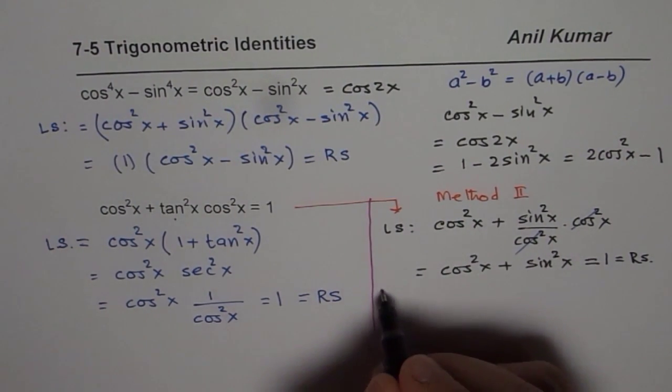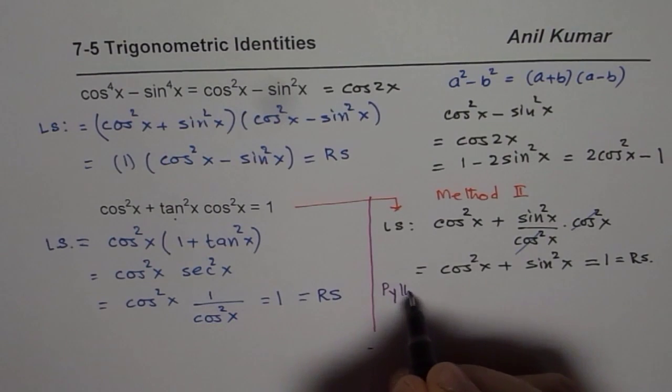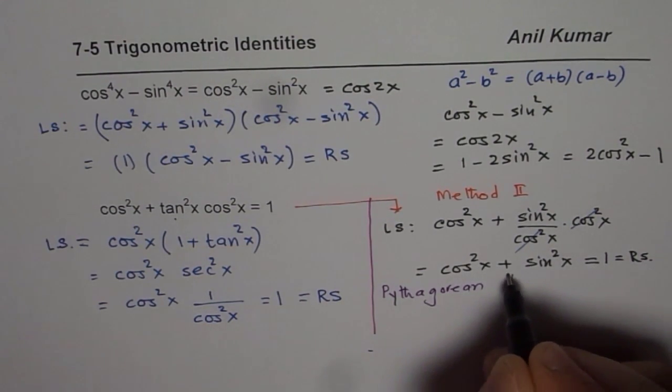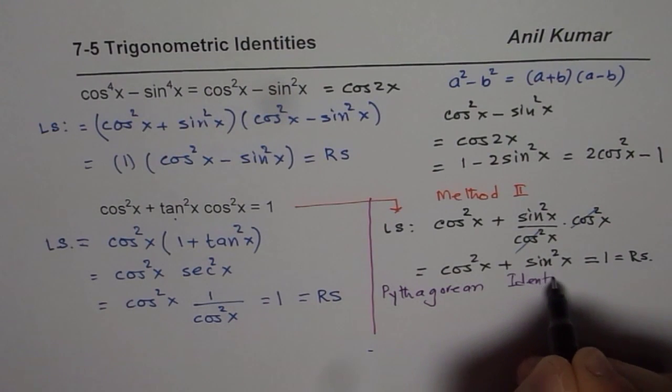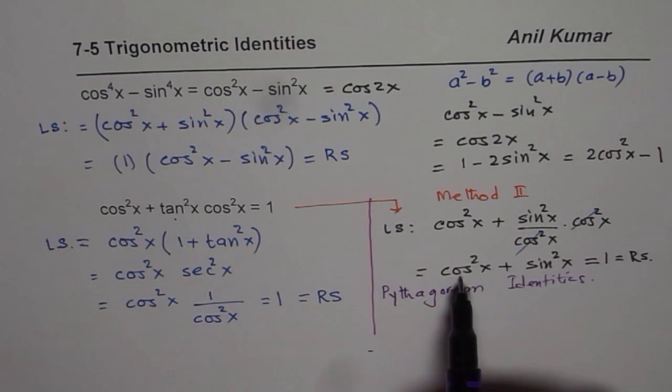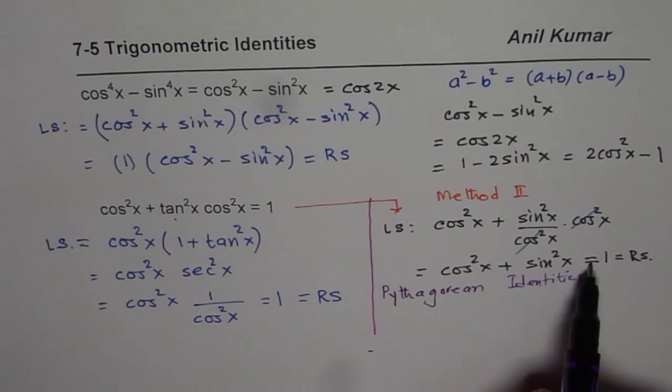So remember Pythagorean identities. We have one here. Cos square x plus sine square x equals to one.